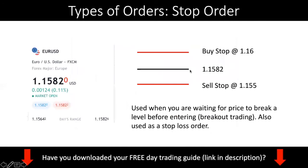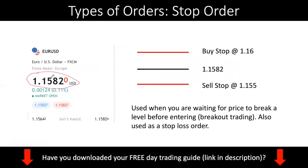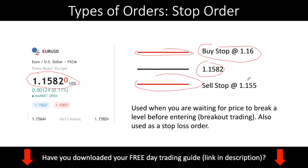Now let's talk about the stop order. Using the same example again — EURUSD at 1.1582. A stop order basically means that you want to buy at a higher price or sell at a lower price. Basically it means that you're getting in at a worse price. So if price is at 1.1582 and you want to buy at 1.16, you would put a buy stop at 1.16. Similarly, if you want to sell at a lower level, it's a sell stop.